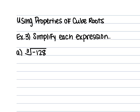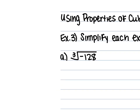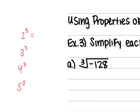Next we're going to talk about cube roots. When simplifying cube roots, we're not looking for perfect squares anymore — we're looking for perfect cubes. So we look for 2 cubed, 3 cubed, 4 cubed, 5 cubed, and so on. What is 2 cubed? 2 times 2 times 2 — it's 8. 3 cubed is 27. 4 cubed is 64. 5 cubed is 125. We're looking for these perfect cubes to be factors of whatever is underneath the radical.